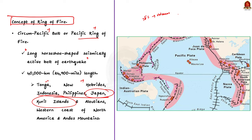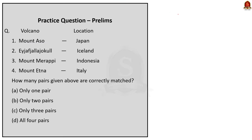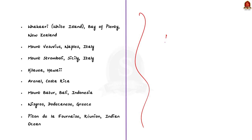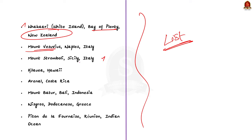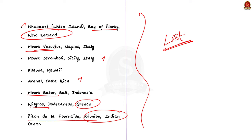All of the matched volcanoes in the question are correctly matched. Here is a list of other recently erupted volcanoes to note and revise: Whakaari Island (White Island) in the Bay of Plenty, New Zealand; Mount Vesuvius in Naples, Italy; Mount Stromboli in Sicily, Italy; Arenal in Costa Rica; Mount Batur in Bali, Indonesia; Nisyros in Greece; and Piton de la Fournaise in Réunion Island. Please revise this list often as it may appear in questions.